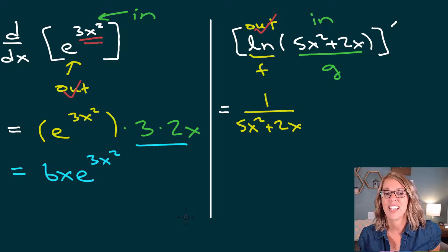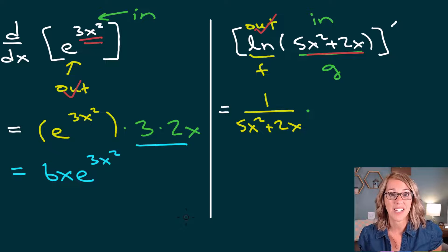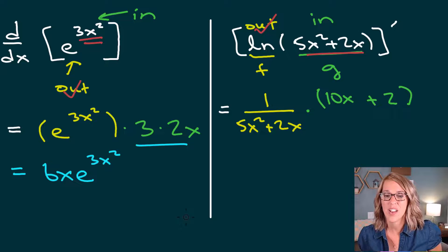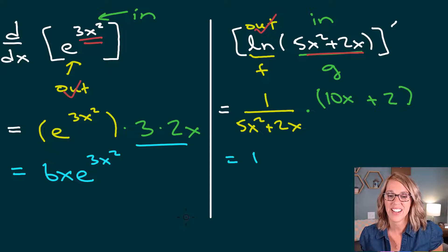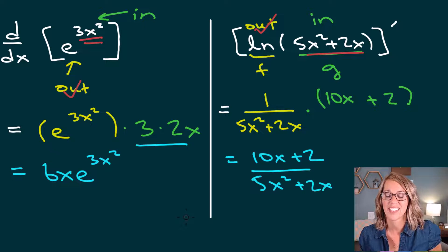Moving on to the inner function only — 5x squared plus 2x — I'm going to multiply that on in the numerator. The derivative of 5x squared is 10x, and the derivative of 2x is 2. Combining these as a single fraction: 10x plus 2, divided by 5x squared plus 2x.